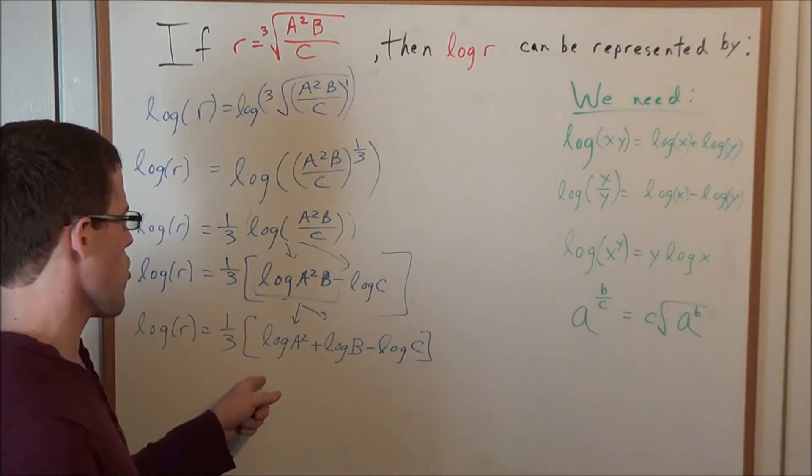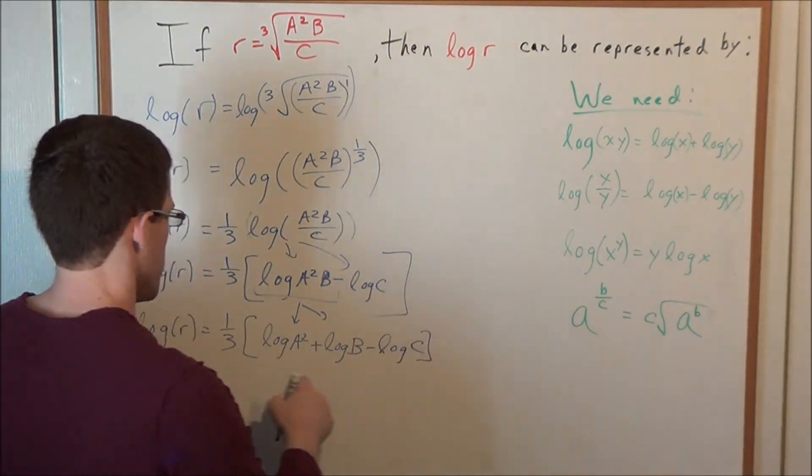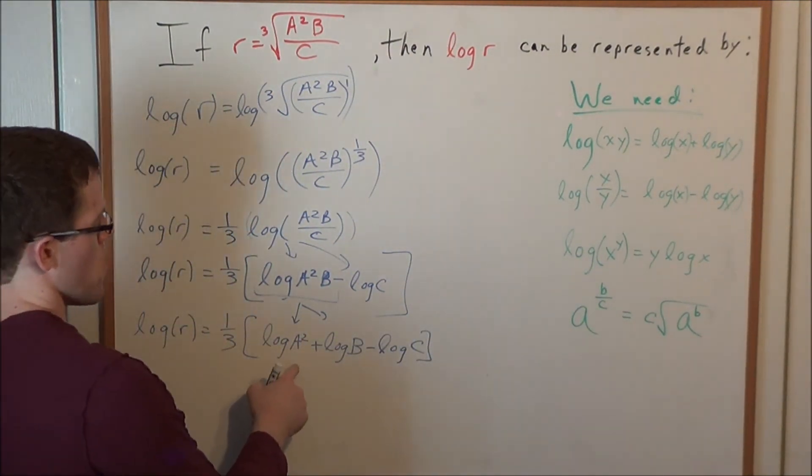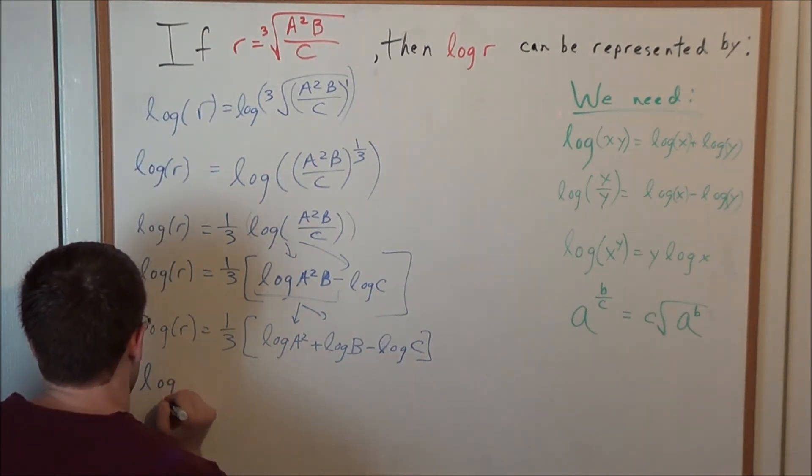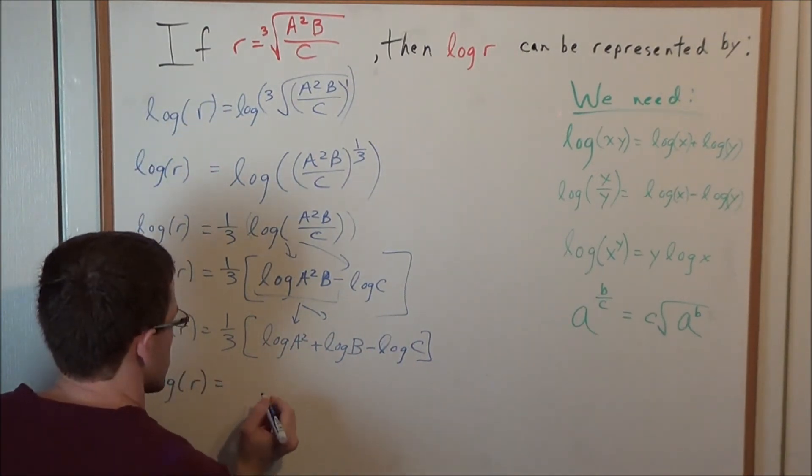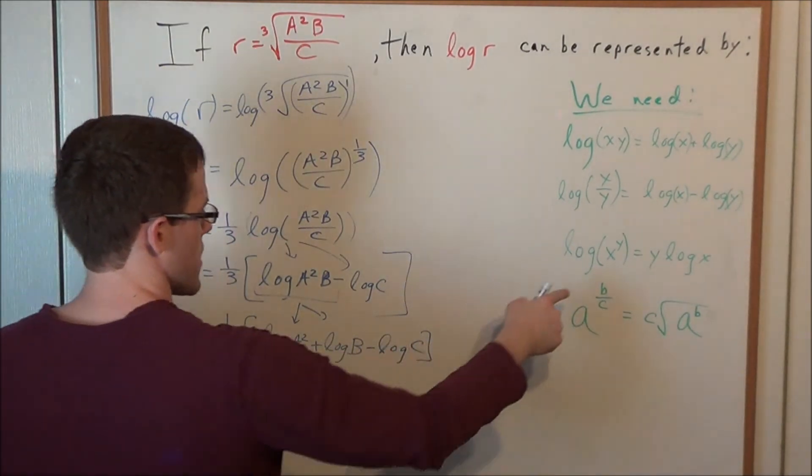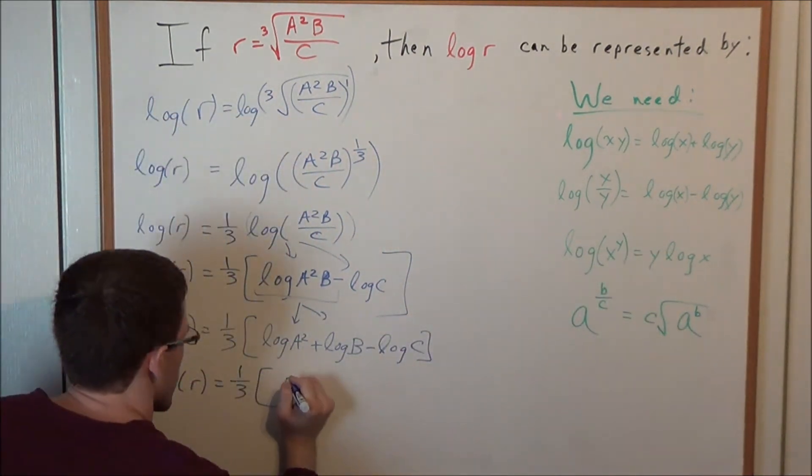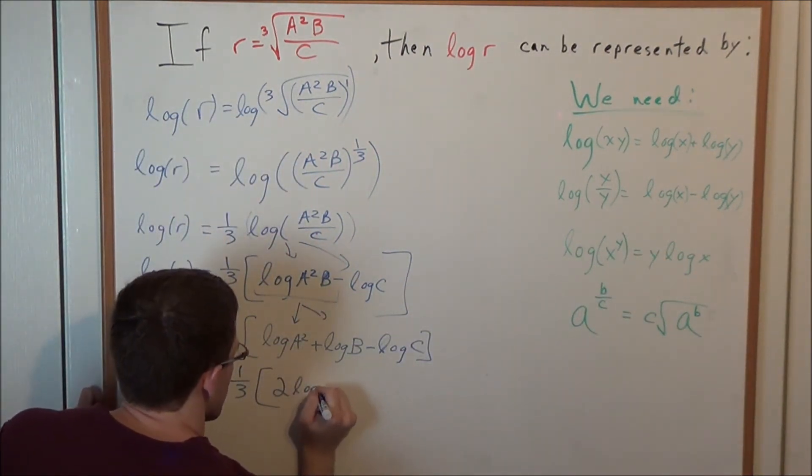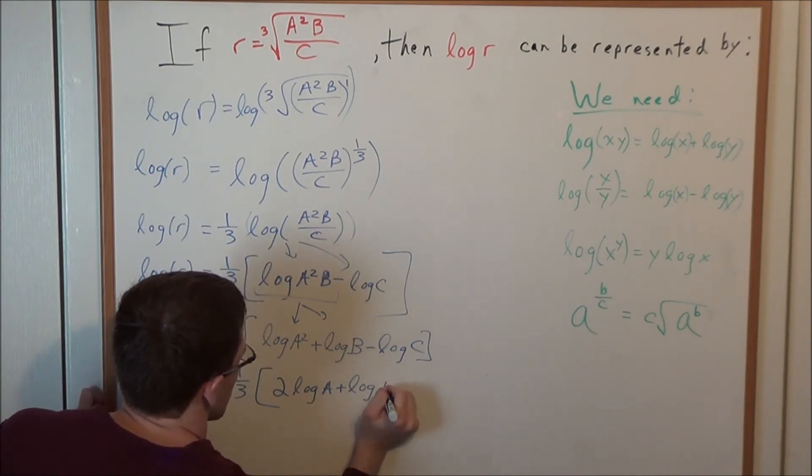But now what do we need to do? We're almost done. What we need to do is we need to use this exponent property to simplify log of a squared. So now we have that log r is equal to one-third. Keeping in mind that the exponent, keeping in mind that the exponent comes outside of the log and goes in front. So now we have that this is two log a plus log b minus log c.